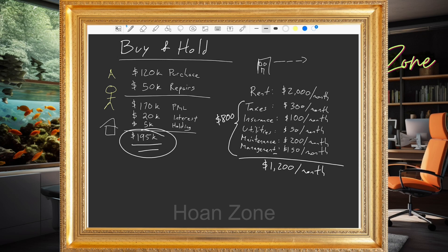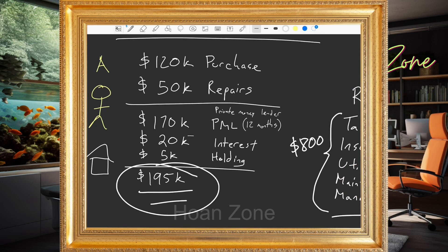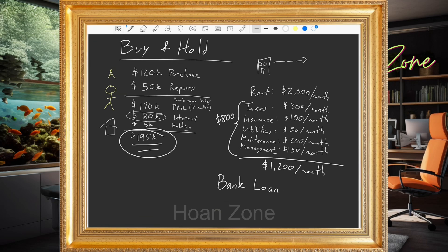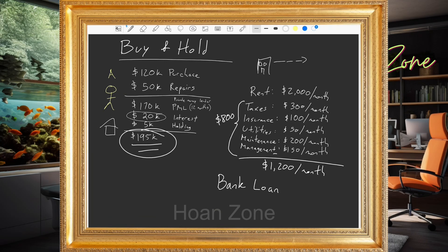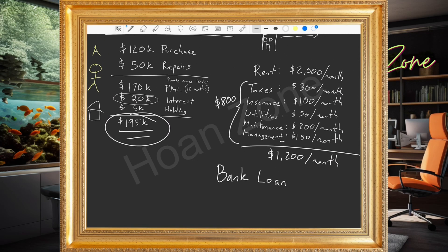We have to go get a loan for this property. The private money lender is only lending to us for 12 months — that's the duration of the loan — and they want to be paid their $20,000 at the end of 12 months. So if we're going to hold this property for years and years, how do we pay them back? The answer is we get a bank loan.